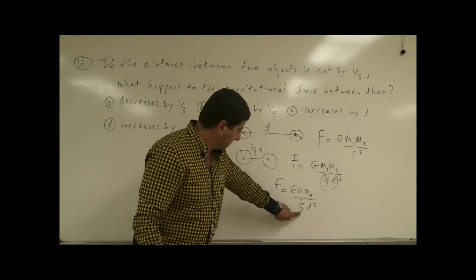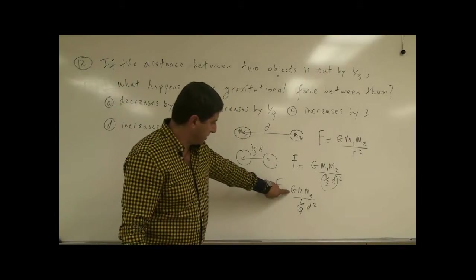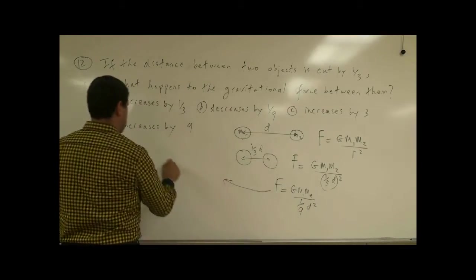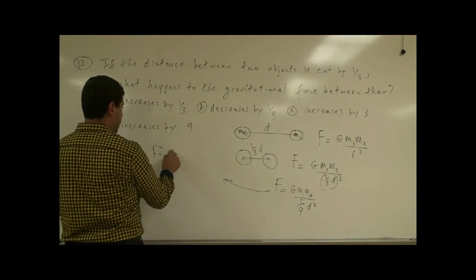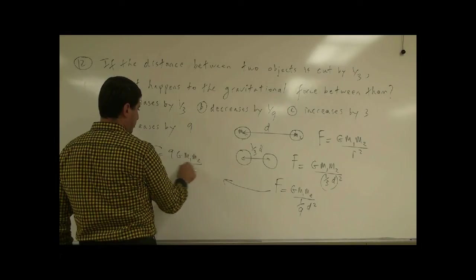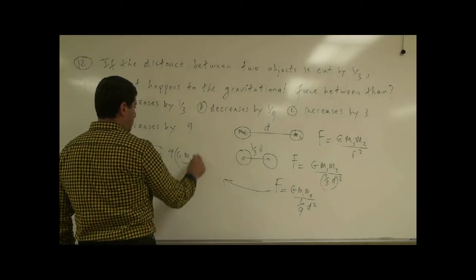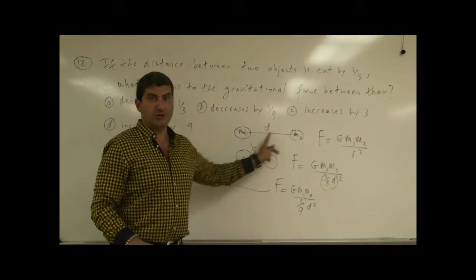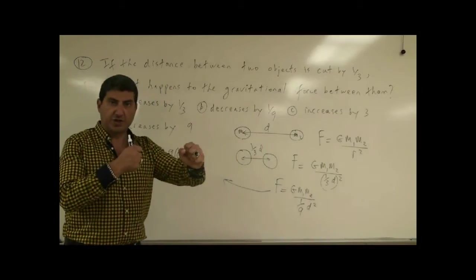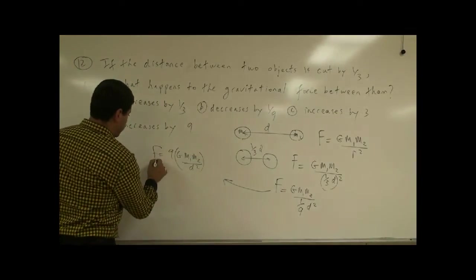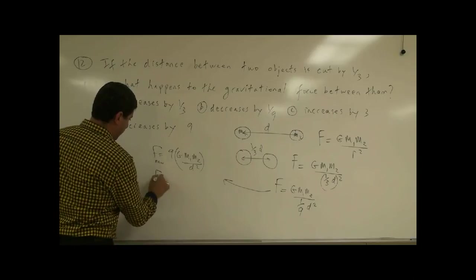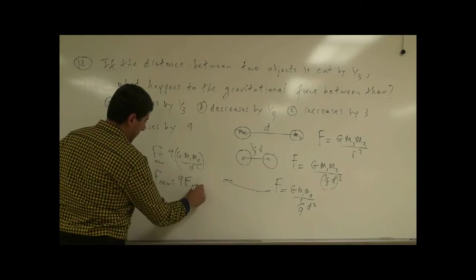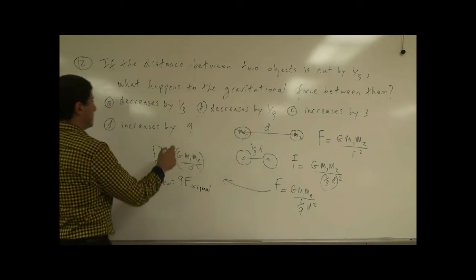So then what happens, the nine down here goes to the top, and becomes nine G M1 M2 over D squared. F is equal to nine G M1 M2 over D squared. Well, what's G M1 M2 over D squared? That's the original force that the two objects exerted on each other. So the new force, we can call this new force, is equal to nine times the original force. So this is the answer.